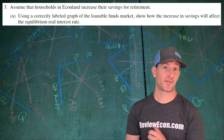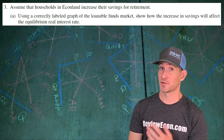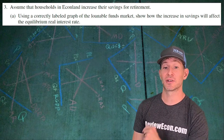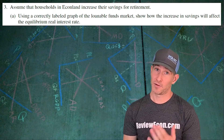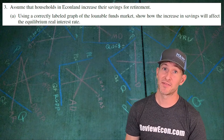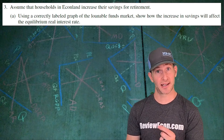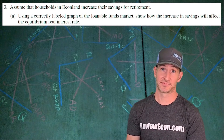This question starts off with an assumption about Econoland. We're assuming that households are going to increase their savings for retirement, and we're going to show the impact of that increase in savings on a properly labeled loanable funds market graph.